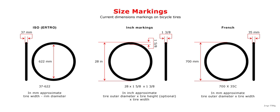ISO 5775 is an international standard for labeling the size of bicycle tires and rims. The system was originally developed by the European Tire and Rim Technical Organization. It is designed to make tire sizing consistent and clear, replacing overlapping informal systems that ambiguously distinguished between sizes. For example, at least six different 26-inch sizes exist just by American notation, and 27-inch wheels have a larger diameter than American 28-inch French 700C wheels.